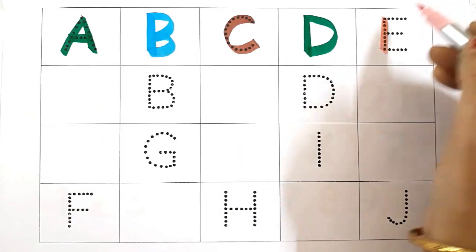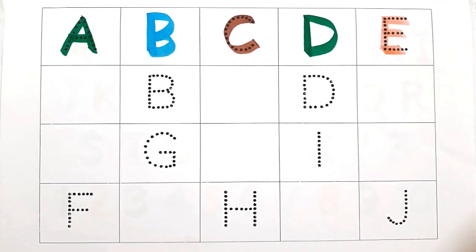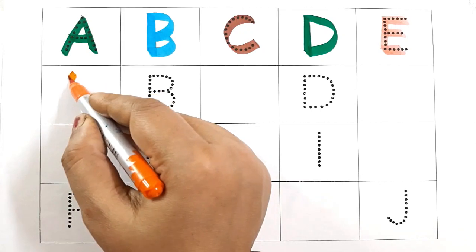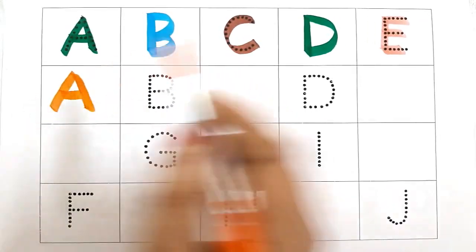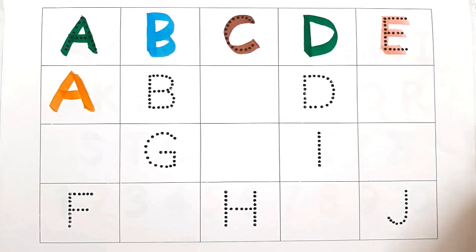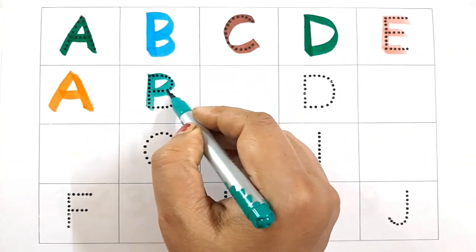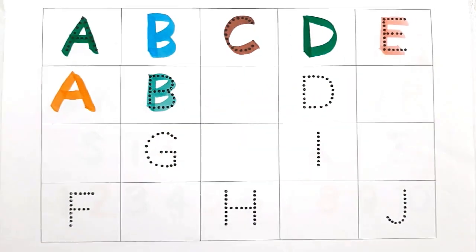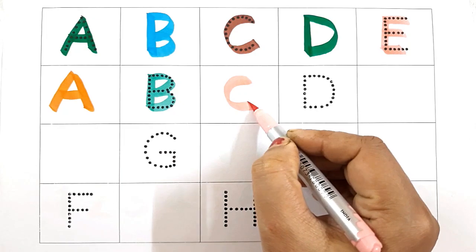E for Egg. A for Aeroplane. B for Bat. C for Car.